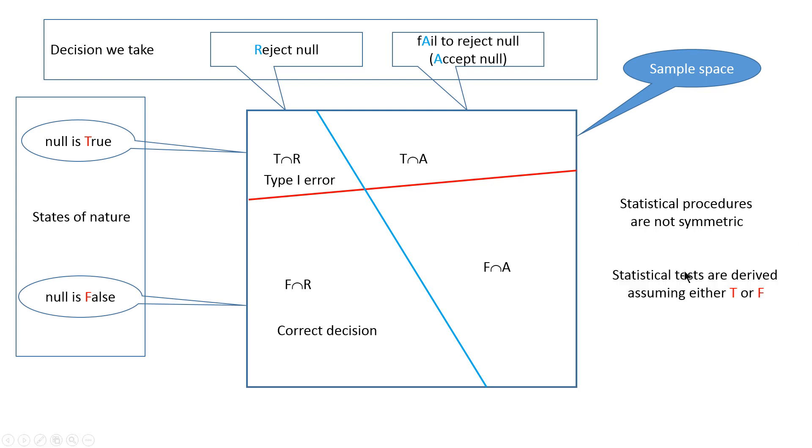The second important remark is that statistical tests are derived assuming either true null or false null. See what happens when we assume that the null is true. It means that effectively our sample space will be this part above the red line, not the whole square that we started with. It means further that the probability of this part should be estimated as a percentage of this whole area, not a percentage of the whole square.